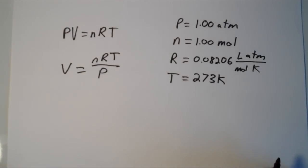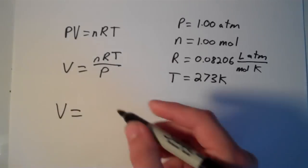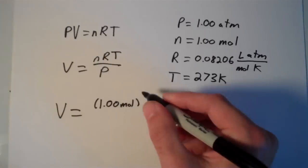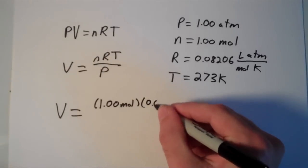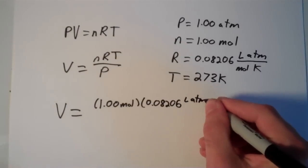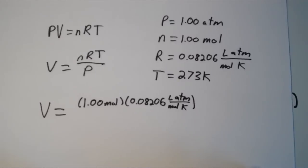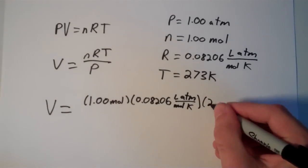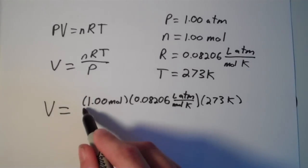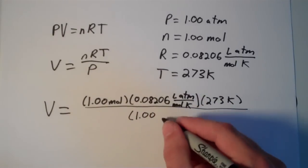And now all we have to do is just plug those numbers in. So we have V is equal to n, that is 1.00 moles, times R, the gas constant, 0.08206 liters times atmospheres over moles times kelvins, times T, which is 273 kelvins. And we put all of this over the pressure, which is 1.00 atmospheres.